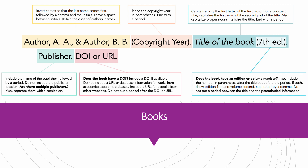Does the book have an edition or volume number? If so, include the number in parentheses after the title but before the period. If both, show edition first and volume second, separated by a comma. Do not put a period between the title and the parenthetical information. For the publisher, be sure to include the name of the publisher, followed by a period. Do not include the publisher location. If there are multiple publishers, separate them with a semicolon. Include a DOI if available. Do not include a URL or database information for works from academic research databases. Include a URL for e-books from other websites. Do not put a period after the DOI or URL.